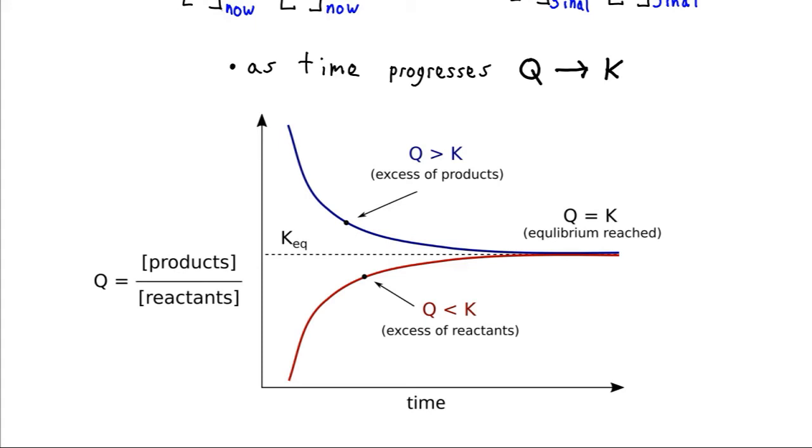The other possibility is that we have an excess of reactants compared to products, in which case Q is going to be smaller than K since the reactants are in the denominator. And that must mean that the reactants will need to be partially consumed and turned into products so that we can reach our equilibrium value of K.